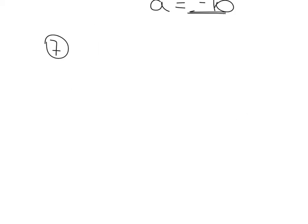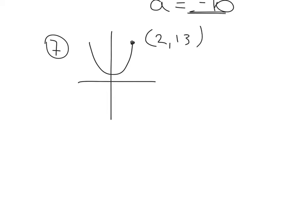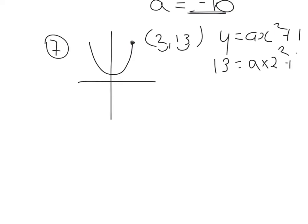Example 7 — slightly different. The parabola does not cut the origin this time. The point is (2, 13) and the equation is y equals ax squared plus 1; find a. It's substitution again — where I see x replace it with 2, where I see y replace it with 13. So 13 equals a times 2 squared plus 1.